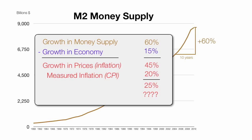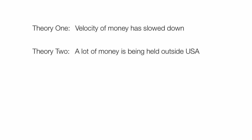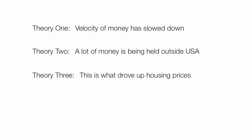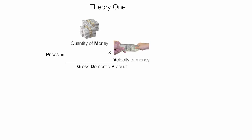So what's causing this difference? There are three theories. Theory 1: the velocity of money has slowed down. If the quantity of money increases but the velocity slows down, prices can remain equal — people stop spending, banks stop loaning money, everything slows down. This seems plausible in today's economy, so I'll give that a green checkmark.